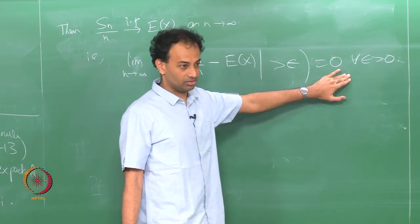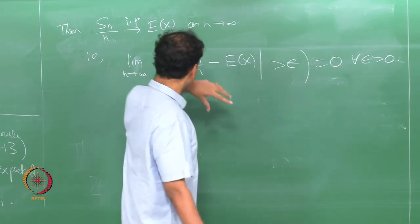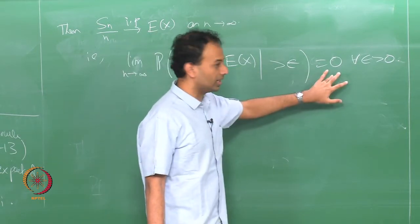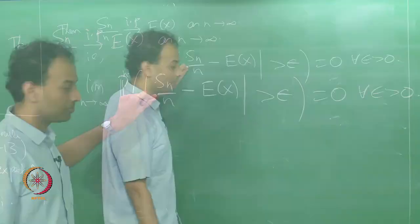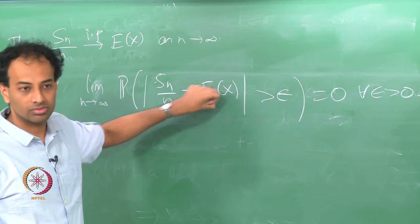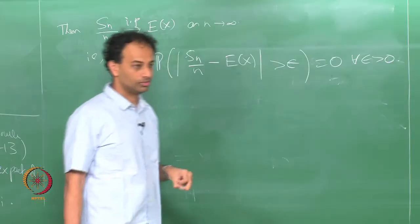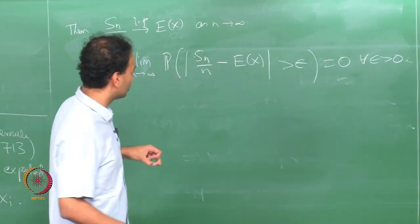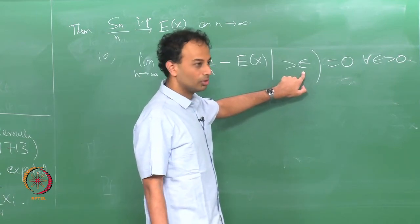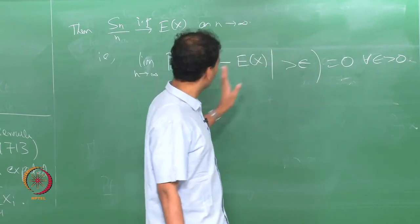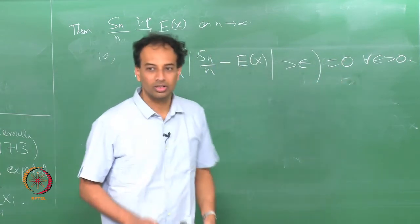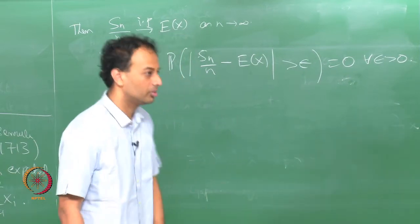The weak law of large numbers is fairly old — the first published proof goes back to Jacob Bernoulli and was published posthumously in 1713, making it almost exactly 300 years old. Explicitly: lim_{n→∞} P(|S_n/n − E[X]| > ε) = 0 for all ε > 0. As n becomes large, the probability of the sample average being different from the expected value goes to 0.